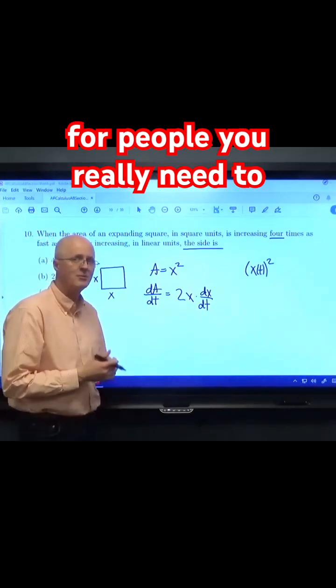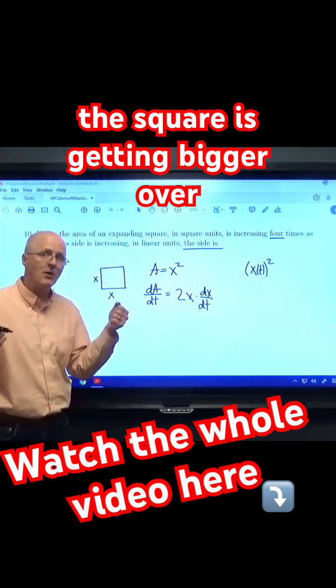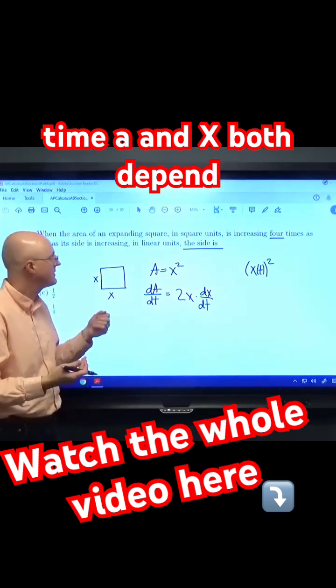This is pretty tricky for people. You really need to think carefully about what's going on. You need to use your imagination. The square is getting bigger over time. A and x both depend on t.